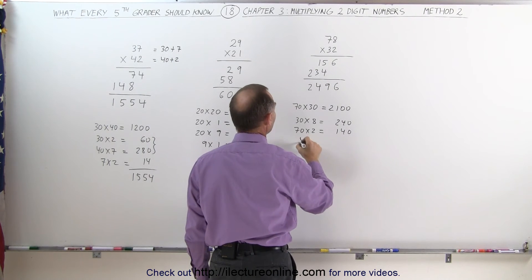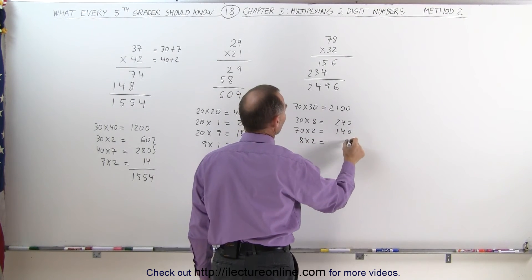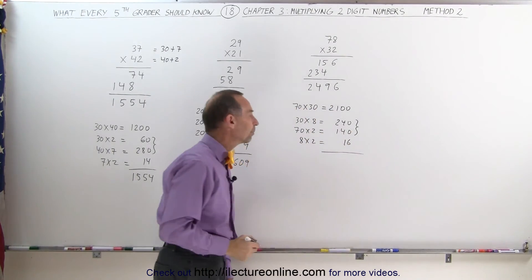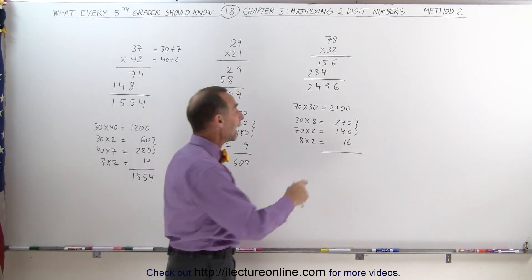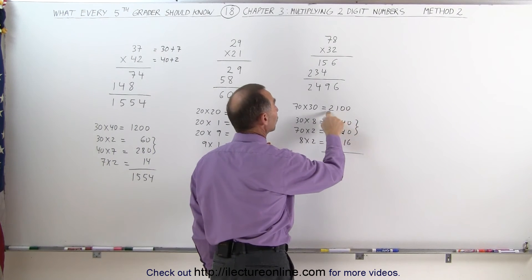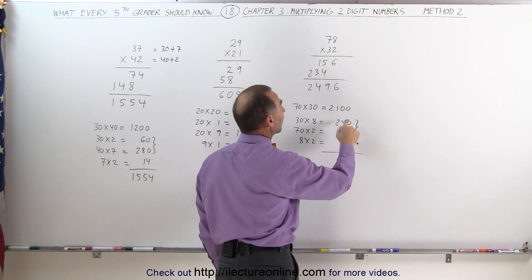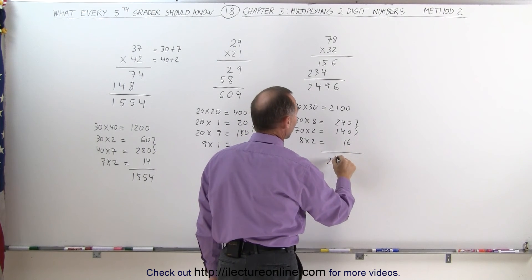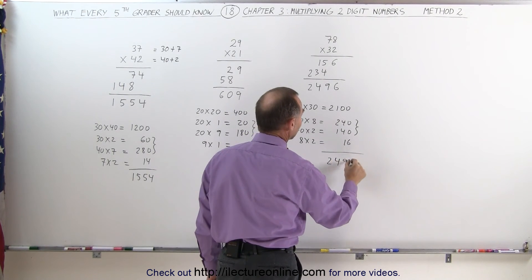Finally, it's 8 times 2, which is 16. The first thing I do is add those two together. 240 plus 140 is 380. Add 380 to 2100 is 2480. Remember 380 plus 100, that's 480. Plus 16 is 2496.